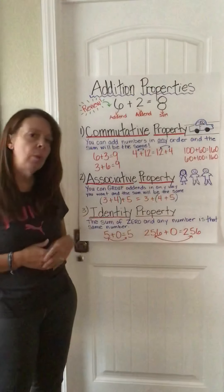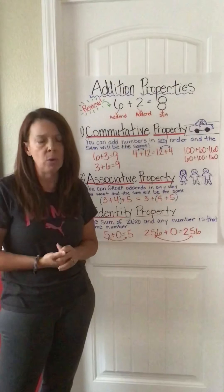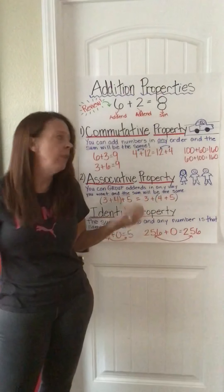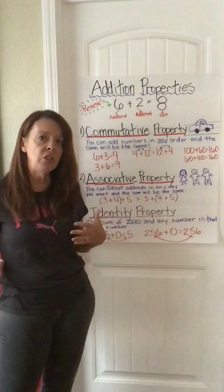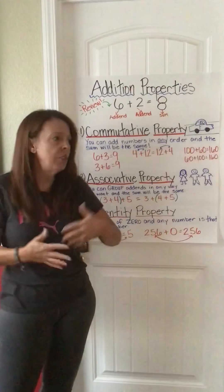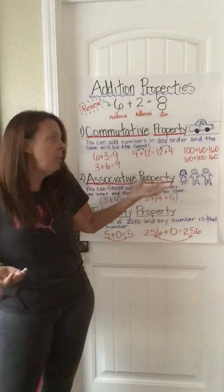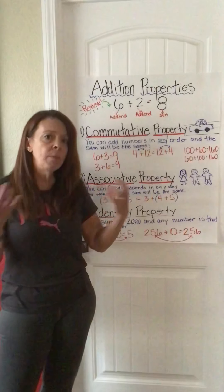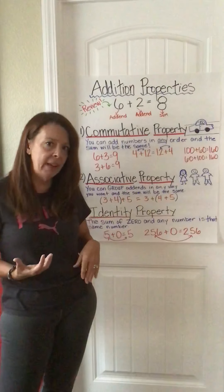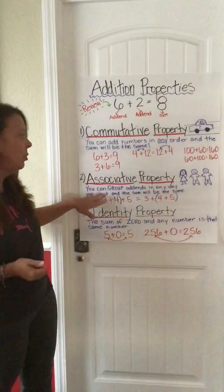The next property is the associative property. I drew a group of friends to help you remember what it means. When you are at school on the playground, sometimes you play with different friends — you associate or group yourself differently. Today you might play with one friend, and tomorrow you might play with another. So you are grouping differently, but it's still the same friends. The associative property says you can group addends in any way you want, and the sum will be the same.